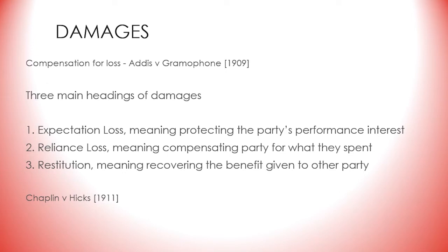It is also important to note that the measure of damages is not affected by the motive of the breach. This was illustrated in the case of Addis v Gramophone in 1909, involving someone's dismissal from their employment. While the claimant did get damages for wrongful dismissal, he could not claim damages for the sharp and oppressive manner in which he was sacked. There are three main headings of damages: expectation loss, meaning protecting the party's performance interest; reliance loss, meaning compensating the party for what they spent; and restitution, meaning recovering the benefit given to the other party. Remember that some difficulty in assessing loss does not mean that the claimant loses his right to damages, unless the loss depends entirely on remote and hypothetical possibilities — as in Chaplin v Hicks from 1911, where difficulty in assessing damages for the loss of the chance to win a beauty contest was not considered a bar to the claim, as real loss had been suffered.